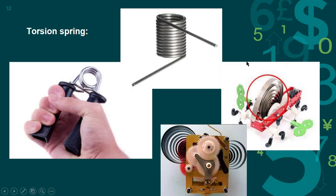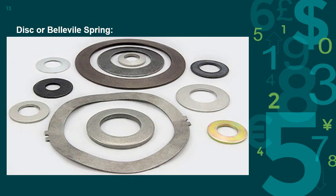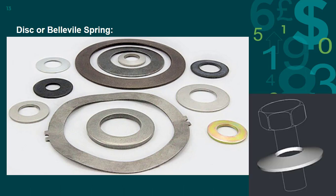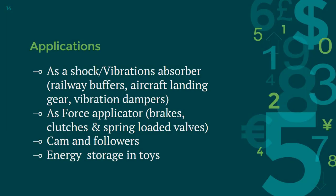Torsion springs are also very commonly used. They can be found in different types of toys in the form of spiral springs, and they also have applications in hair clippers and exercise machines for the fist. Then we have barrel springs, which are mostly used along with bolts.